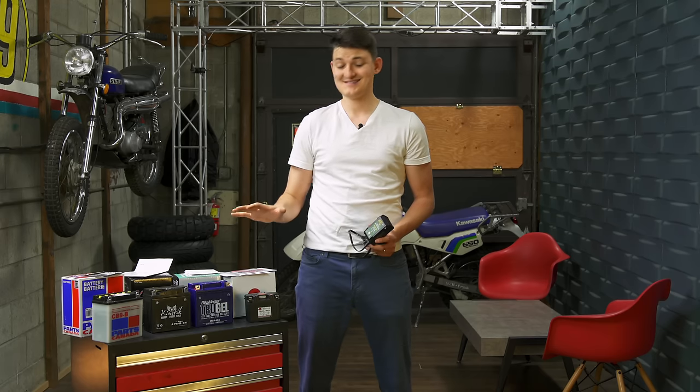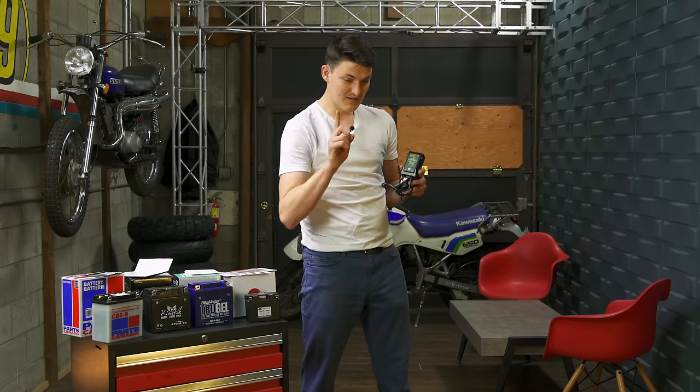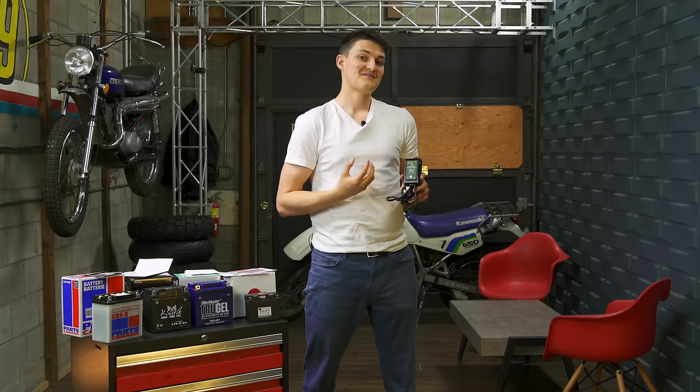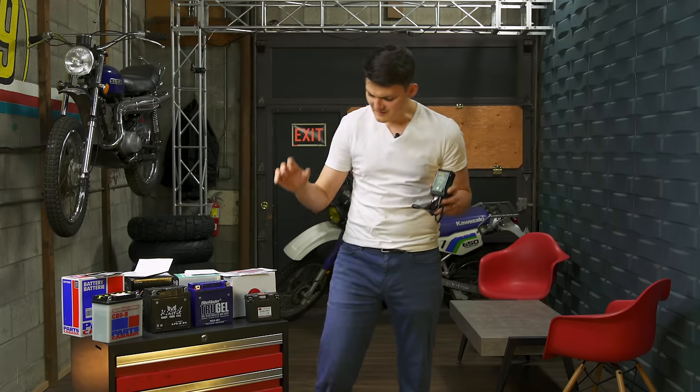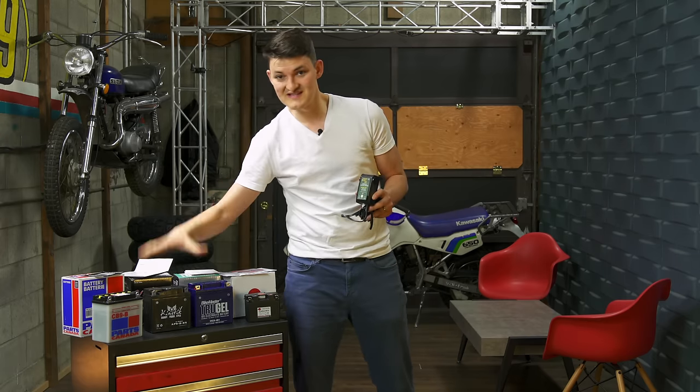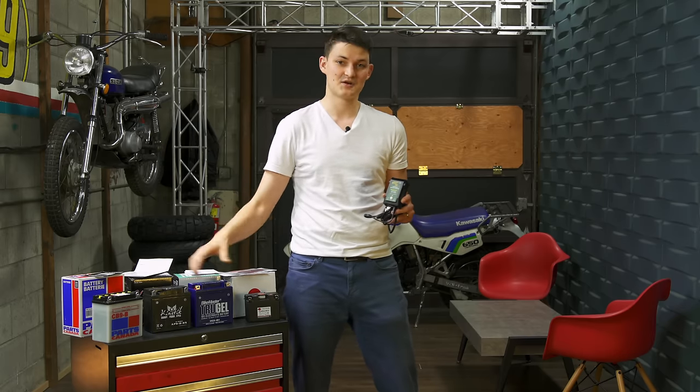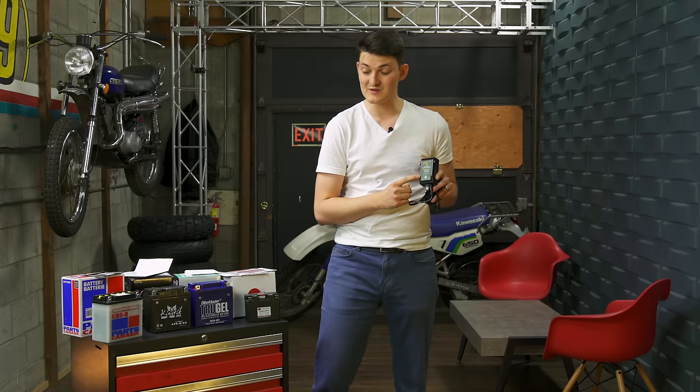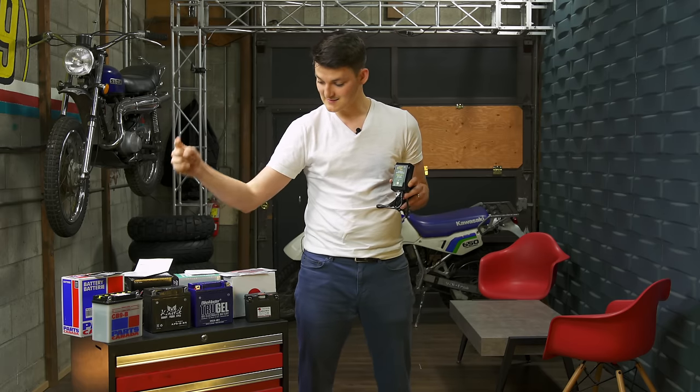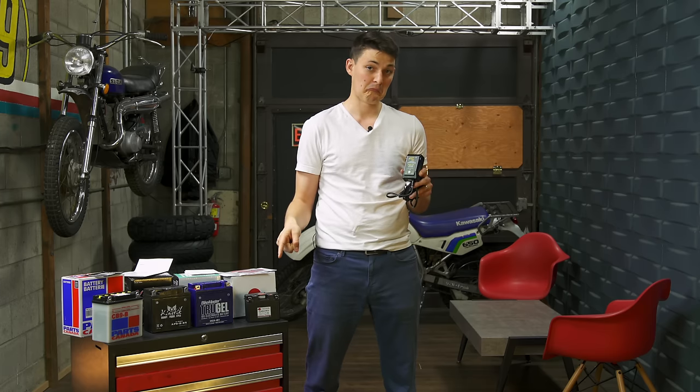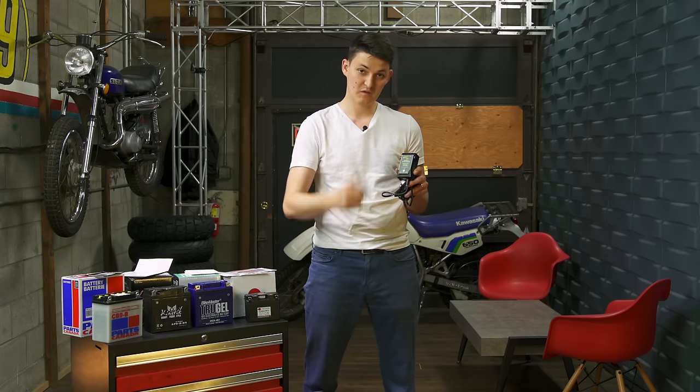While these batteries are as new as possible, I'll minimize manufacturing date discrepancies by fully charging each with the same charger. Usually lithium cells require a different unit, because the high voltage desulfation stage of lead acid charging can cook lithium batteries. But I found this battery tender junior 800, which does flooded lead acid, AGM, gel, and lithium batteries. One charger, one less variable.